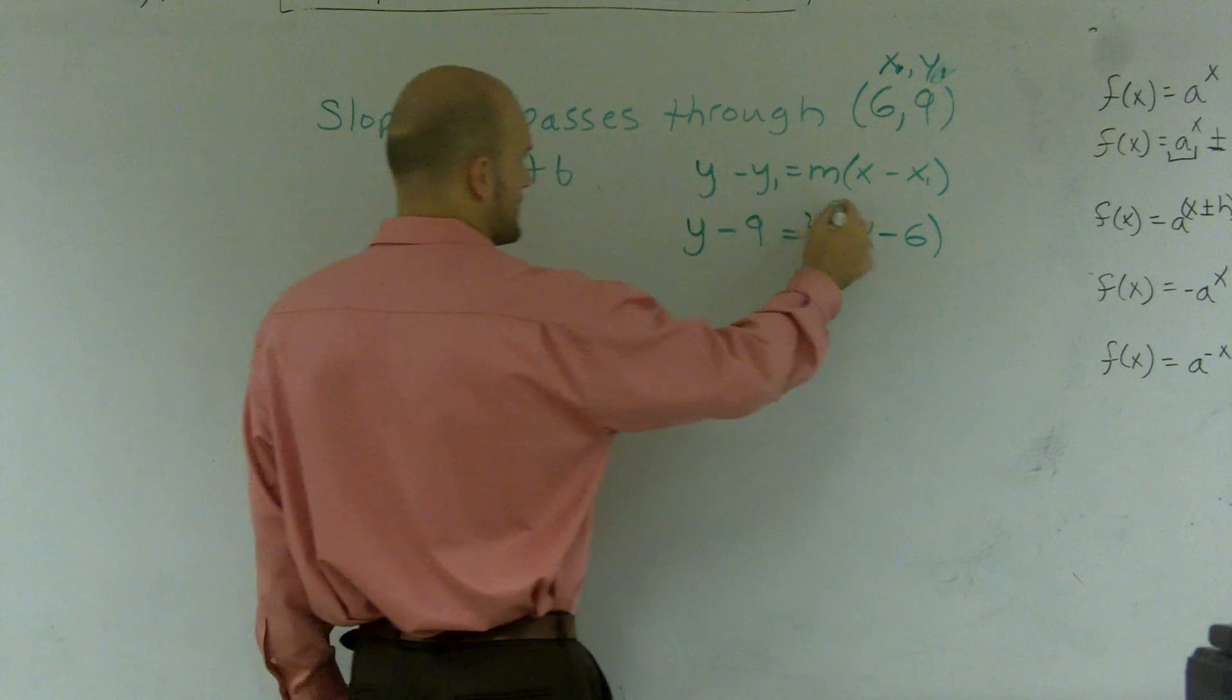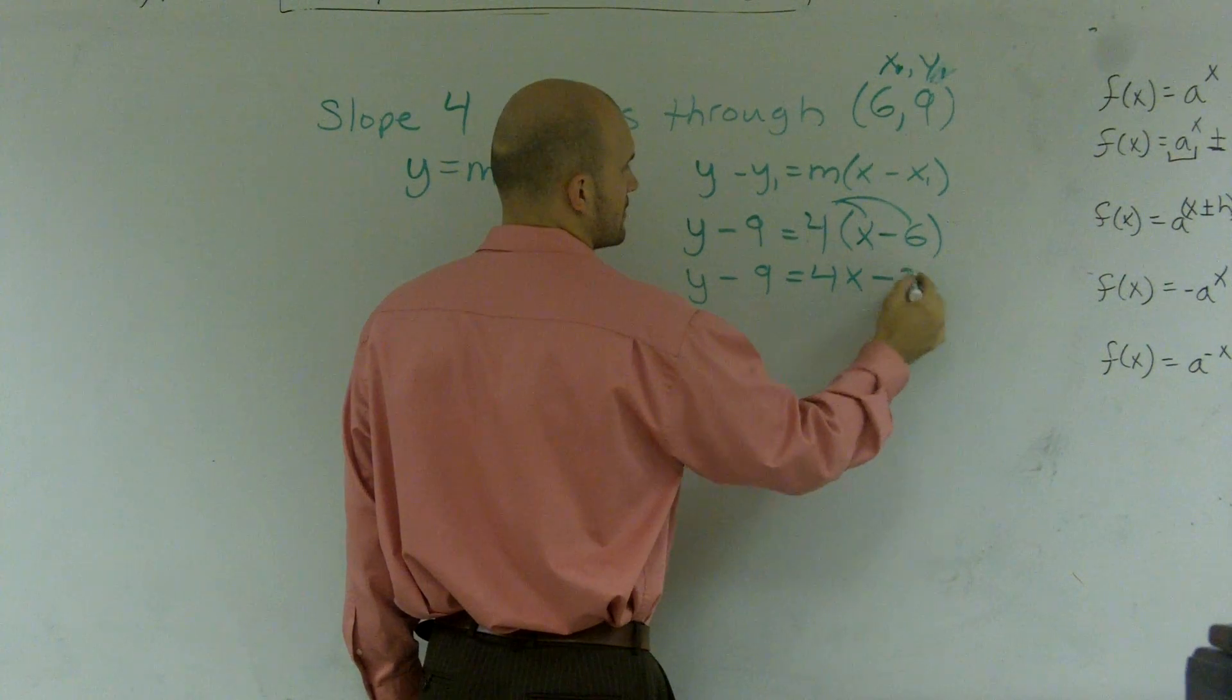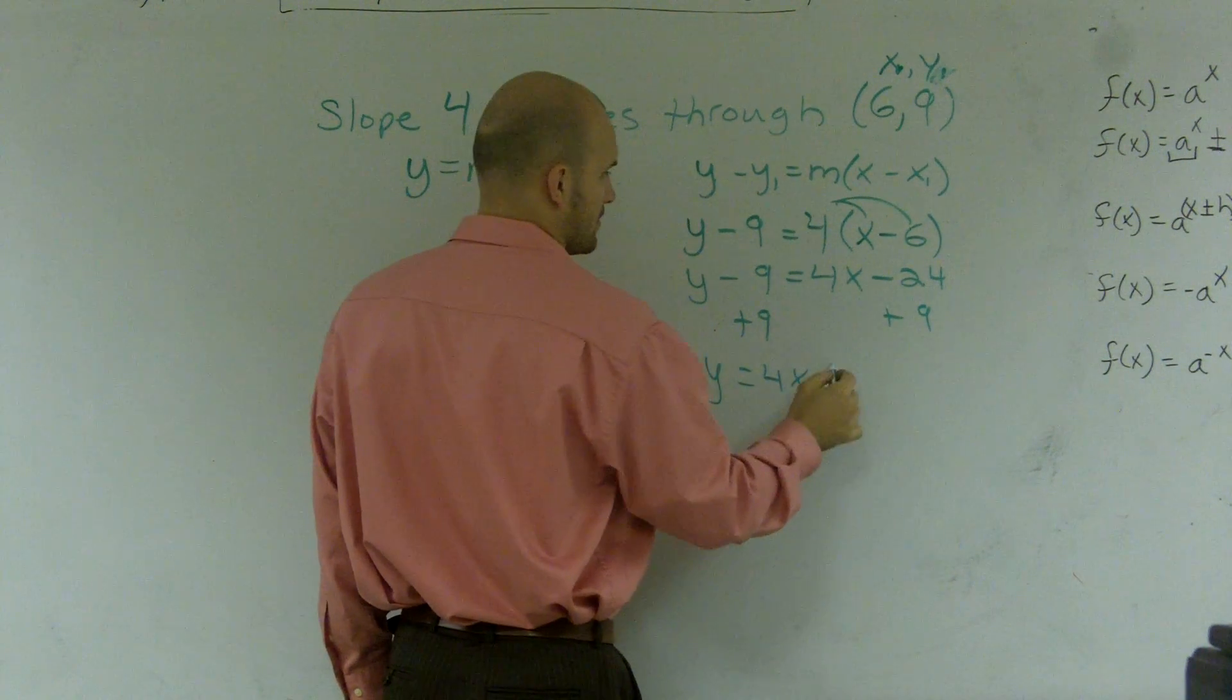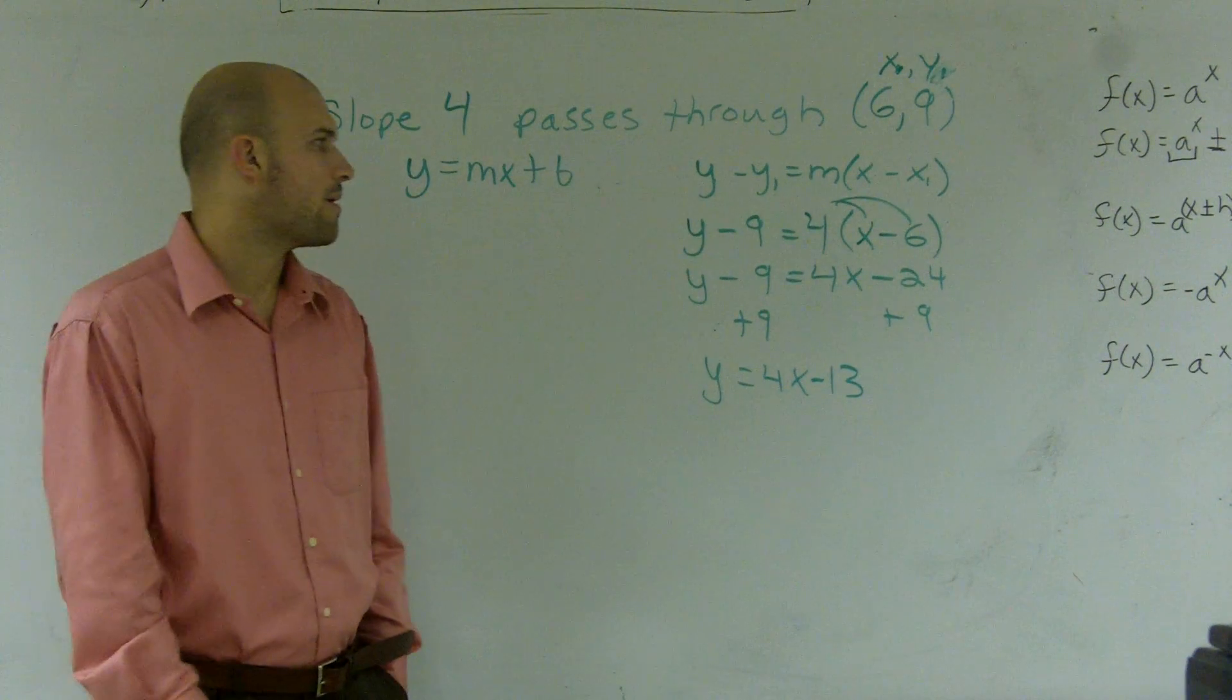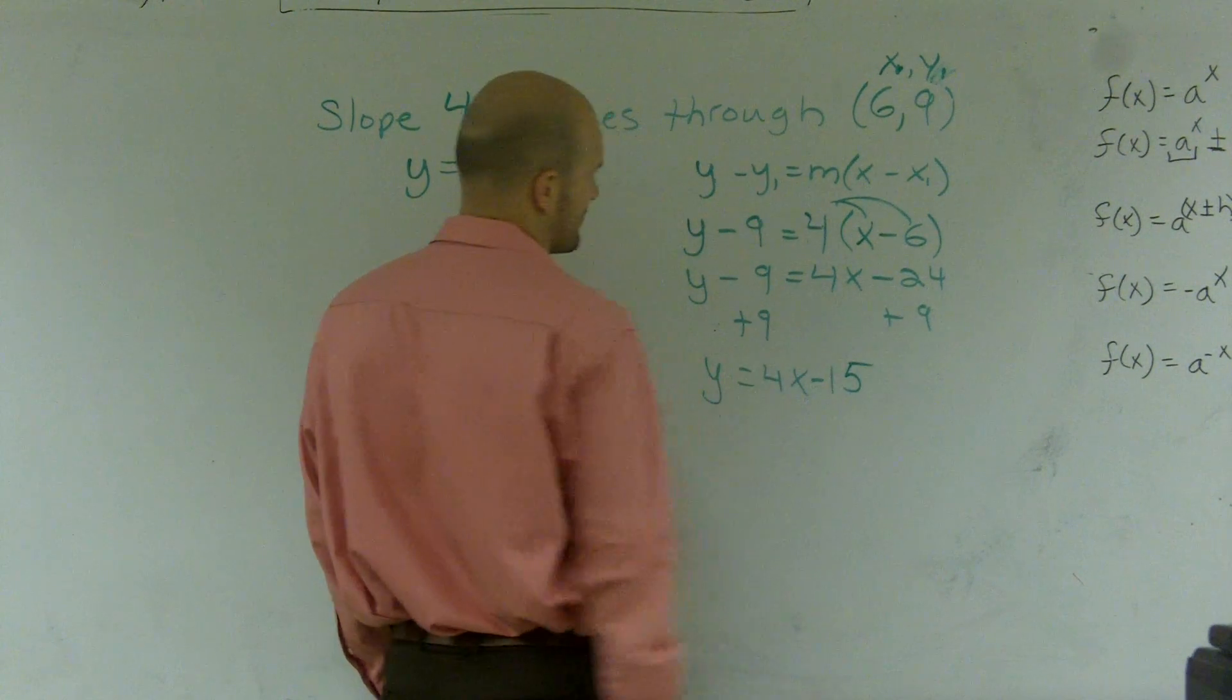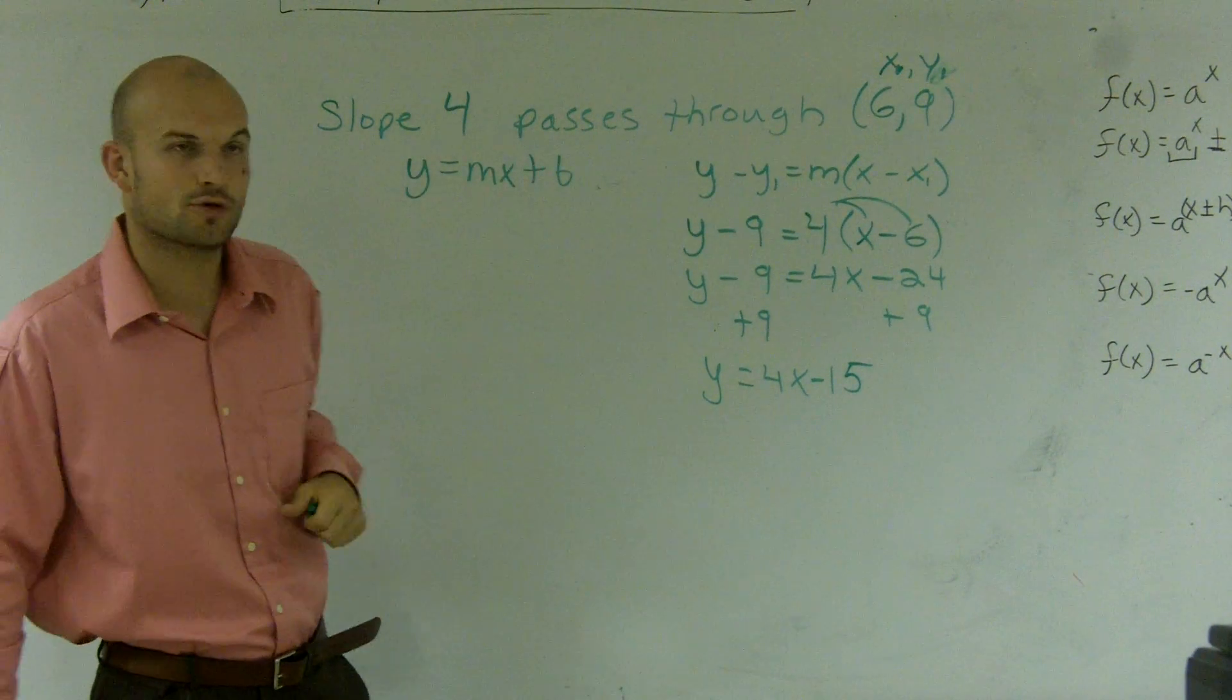Then what I can do is use distributive property, and then I can just add this over. And minus 15, right? Minus 15. So that's how you find the slope of a line that goes through the point 6 comma 9 that has a slope of 4.